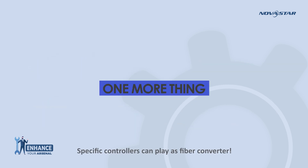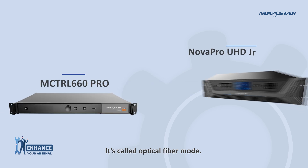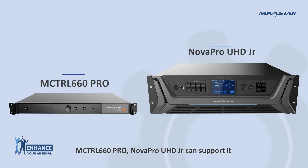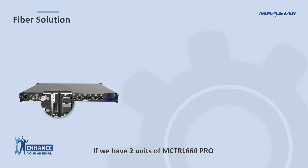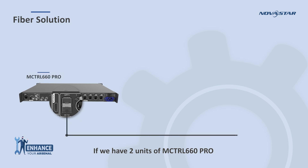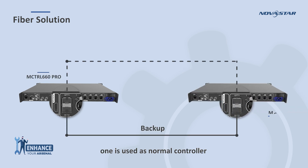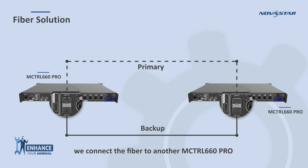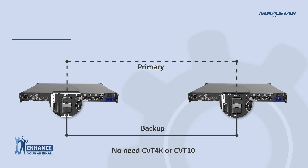One more thing: specific controllers can act as a fiber converter — yes, it is amazing. We can use the fiber port as input; it's called optical fiber mode. MCtrl 660 Pro and ProUHD Junior can support it. If we have two units of MCtrl 660 Pro, one is used as a normal controller, and we connect the fiber to the second MCtrl 660 Pro, which will then work as a fiber converter. No need for CVT4K or CVT10.